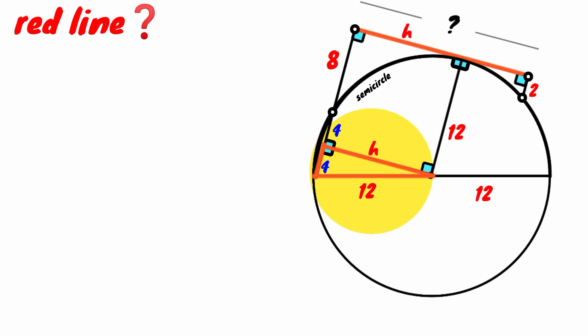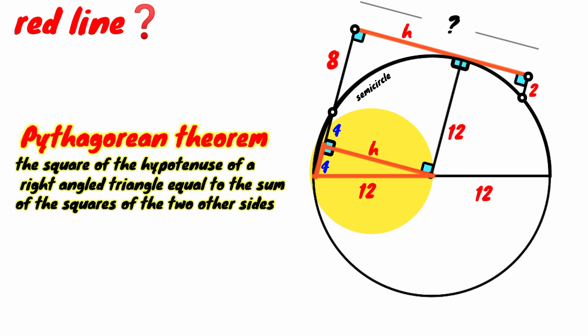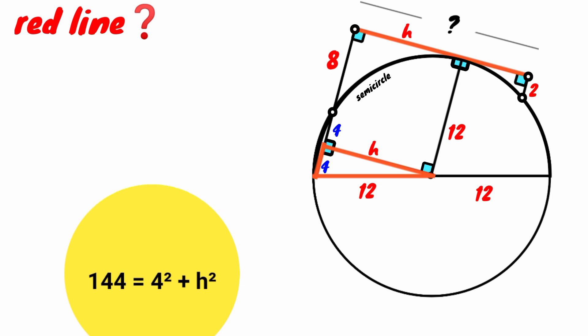We look at this triangle. It is a right angle triangle. We can use the Pythagorean theorem on h. The Pythagorean theorem states that the square of the length of the hypotenuse is equal to the sum of the squares of the length of the two other sides. The hypotenuse is the side facing the right angle which is this here. So applying it, 12 squared equals 4 squared plus h squared. 12 squared is 144 and 4 squared is 16.